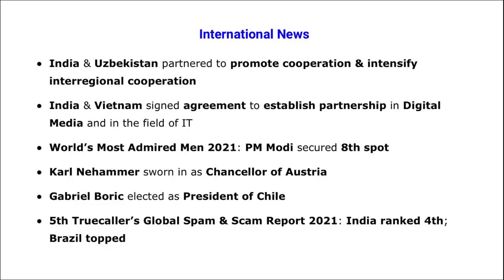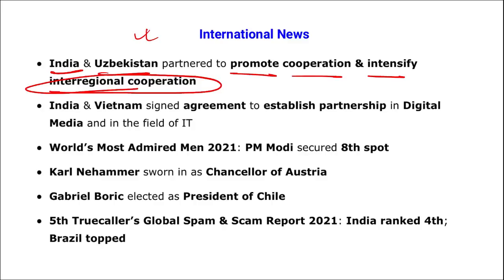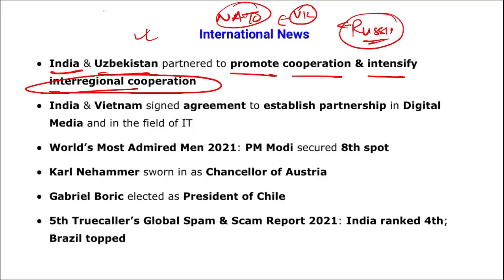India and Uzbekistan partnered to promote cooperation and intensify inter-regional cooperation. Currently, there is tension between Russia and Ukraine — Russia does not want Ukraine to be part of NATO (North Atlantic Treaty Organisation). India and Vietnam signed an agreement to establish partnership in digital media and the field of IT.